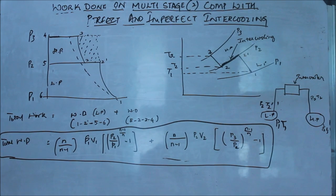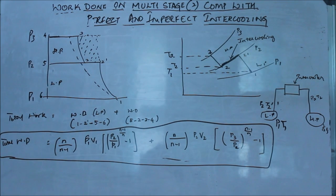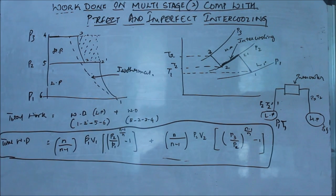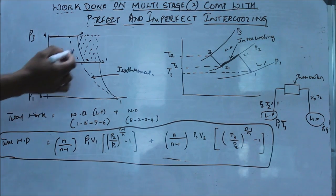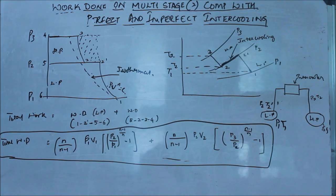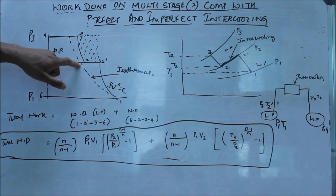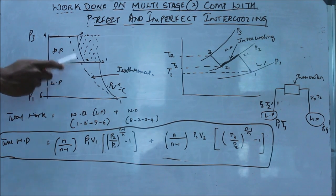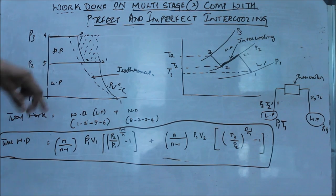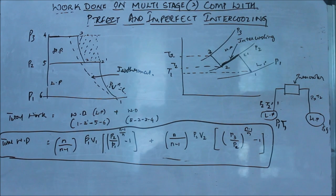Coming back to the expression for work done, it is a very simple equation. One thing to remember is that if it is imperfect intercooling, this is the isothermal line, which is kind of an ideal line — it cannot be achieved. These two lines are polytropic lines, which follow the law PV^n = constant. In imperfect intercooling, this intercooling stage — point 2 — will not intersect with the isothermal line because T2 is not equal to the initial temperature T1. So while drawing the diagram, keep that in mind. Just divide the diagram into two single-stage compressors and add those two equations for the work done.